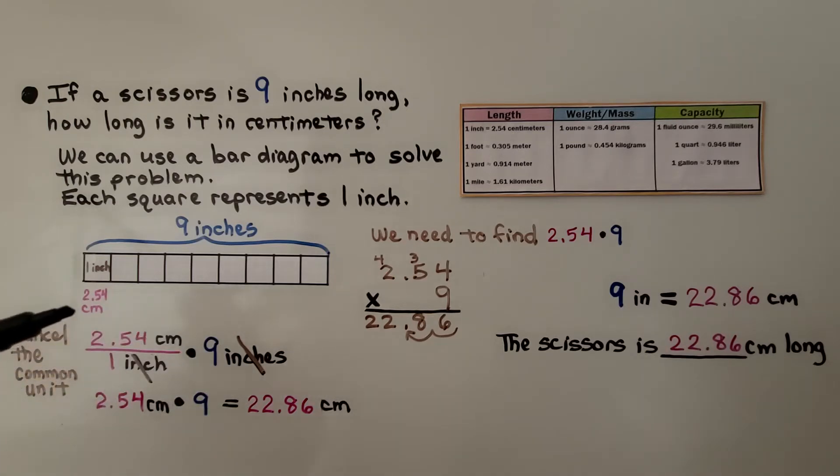We can write it as a unit rate of 2.54 centimeters over 1 inch. We're going to multiply it by 9. We cancel the common unit, the inch, and that's going to give us 2.54 centimeters times 9. Do the math on the side, and we get 22.86 centimeters.